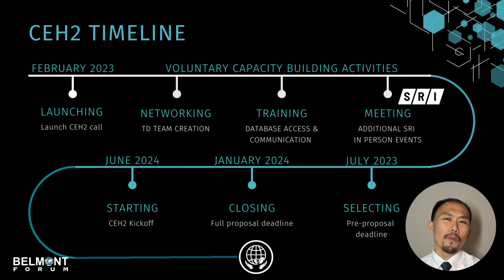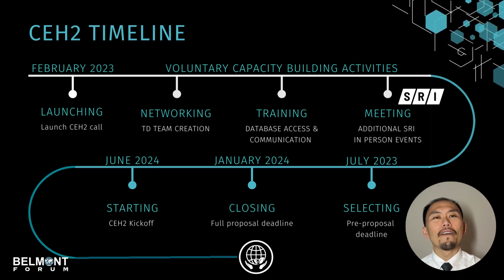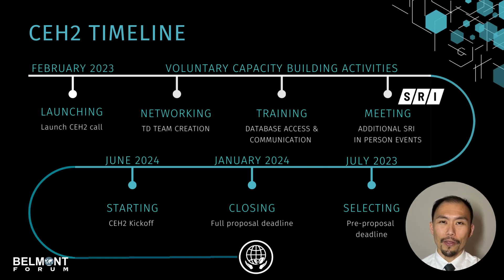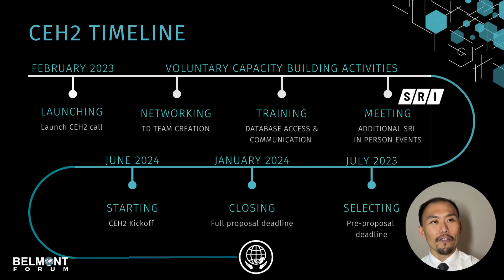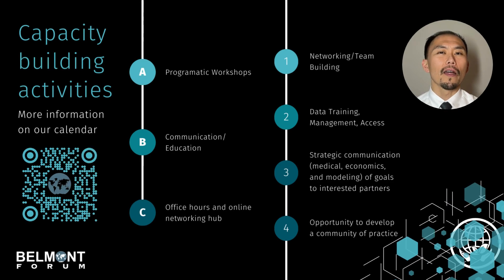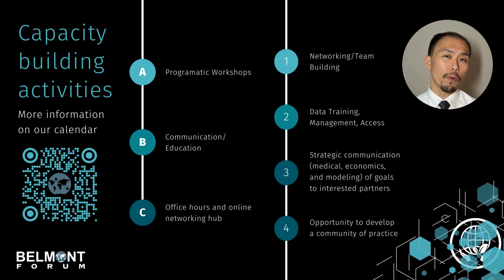At this point, you might be wondering why there are so many months between the start date and the final submission date. That's because we have voluntary capacity-building activities that range from virtual to in-person activities hosted by our partners and coordinated through the National Science Foundation. As you can see in this timeline, starting from networking, training, and meetings, then the selection process — proposals will close in January and projects will start in June.